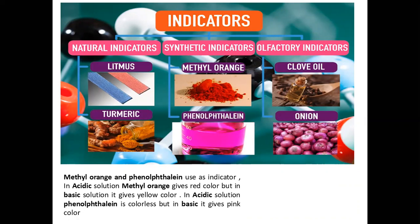If I talk about the natural indicator, you can test acid or base from it. Two natural indicators are litmus and turmeric. For litmus, remember there are two types of litmus papers — one blue and one red. What does the base do? It converts red litmus paper into blue. And what does acid do? It converts blue litmus paper into red.